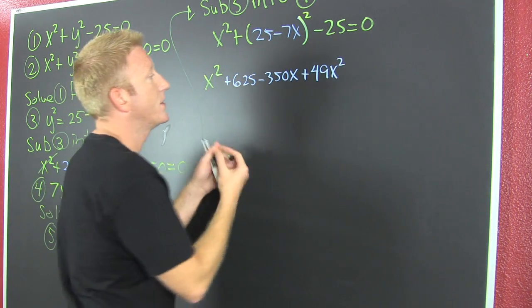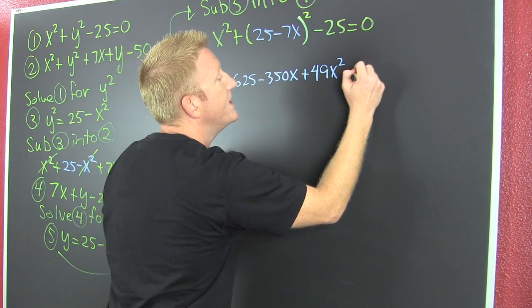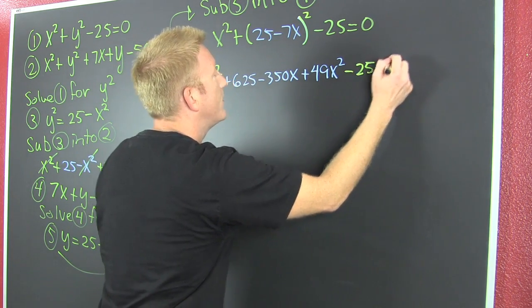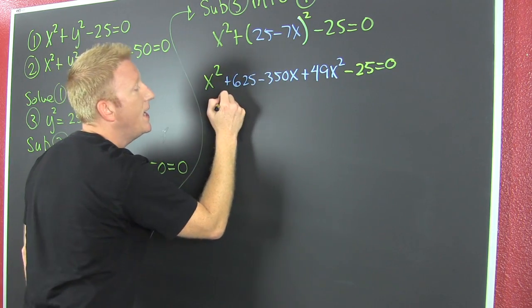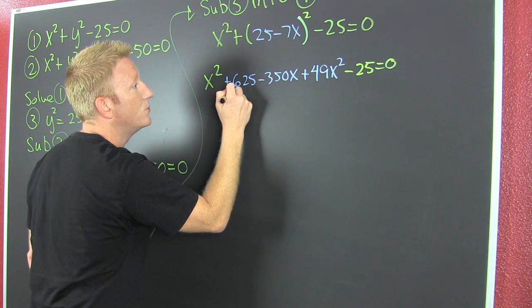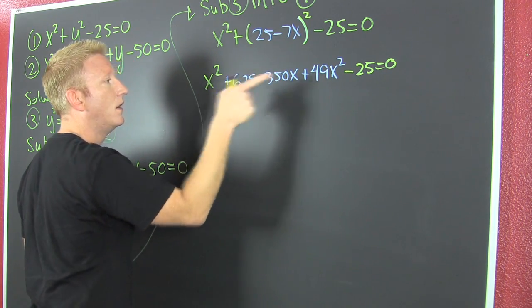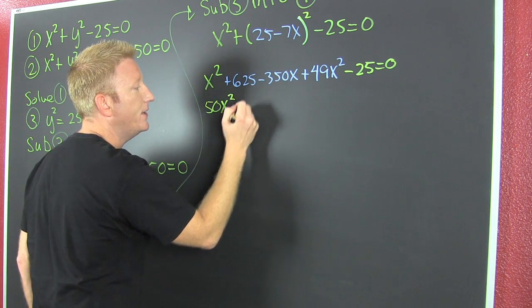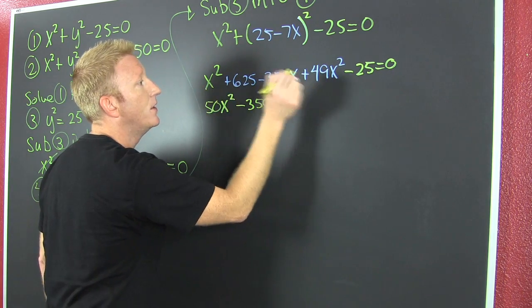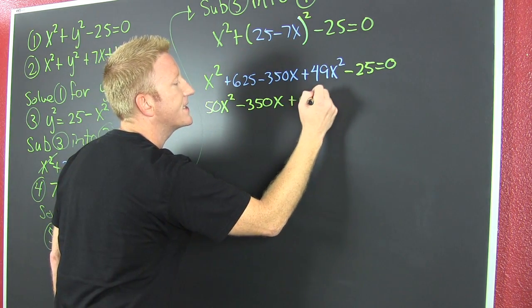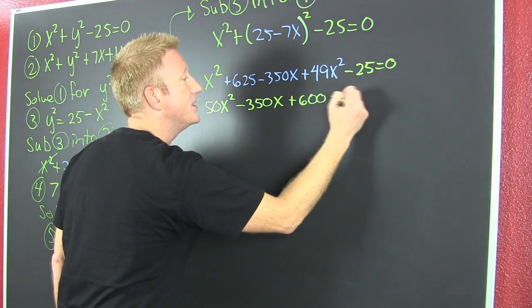Minus 25 equals 0. And I'm gonna collect and combine and I'm gonna find that I have 50x squared minus 350x plus 600 equals 0.